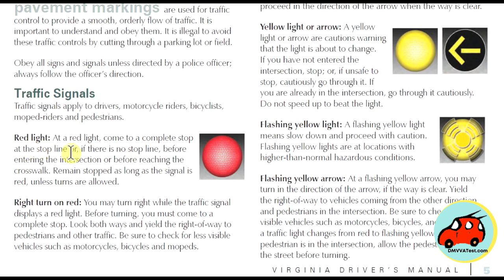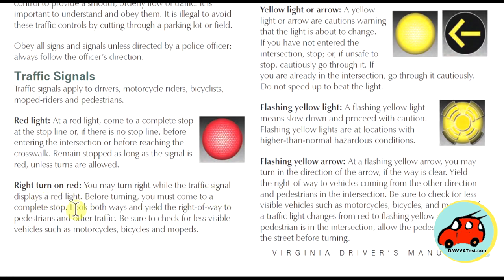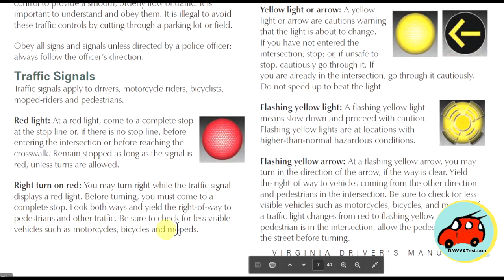Usually there's a stop line or a crosswalk that you have to stop before. You have to remain stopped as long as the signal is red. You can make a right turn on red, but before turning you must come to a complete stop, look both ways, yield the right-of-way to pedestrians and other traffic, and check for less visible vehicles such as motorcycles, bicycles, and mopeds.